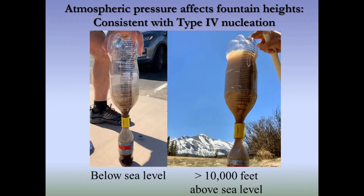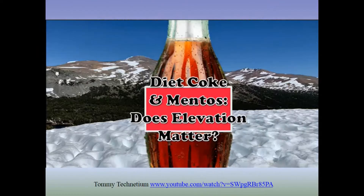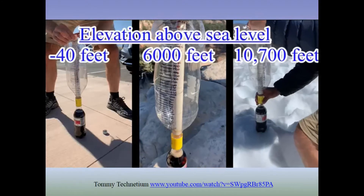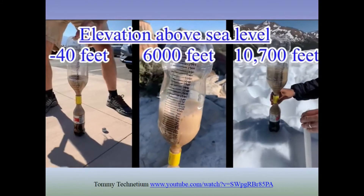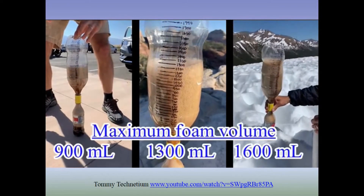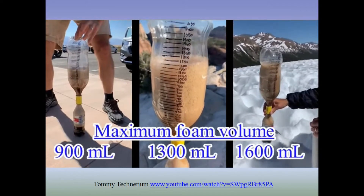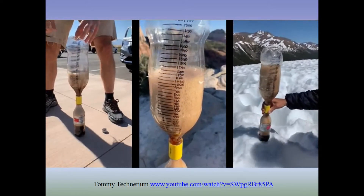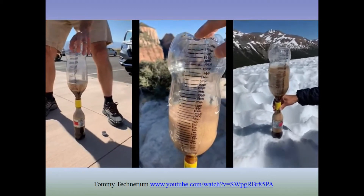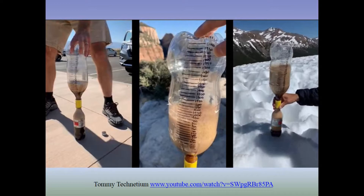Here's a video showing this in action. On the left is Death Valley below sea level, the middle is around 6,000 feet, and the right is around 11,000 feet. The maximum foam volume achieved follows a clear direct relationship with elevation and an inverse relationship with surrounding atmospheric pressure.